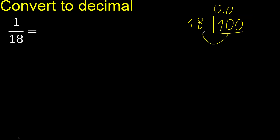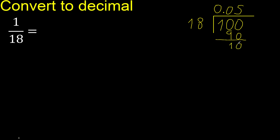100 is not less than 18, therefore we proceed. 18 multiplied by which number is nearest to 100 but not greater? 18 multiplied by 6 is 108 — that is greater. 18 multiplied by 5 is 90 — that is not greater. 100 minus 90 is 10.